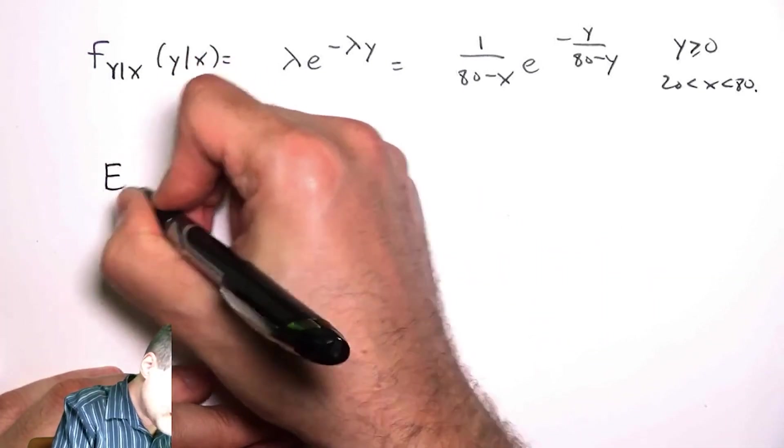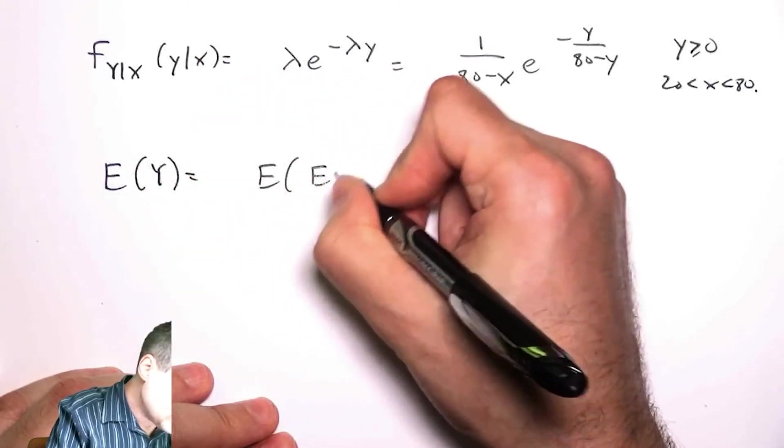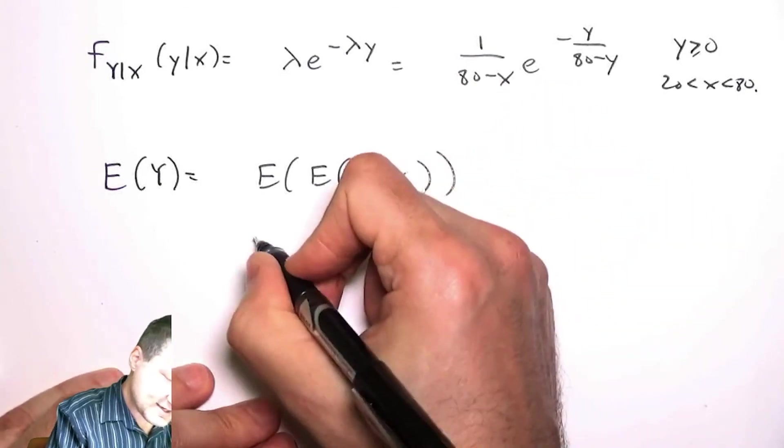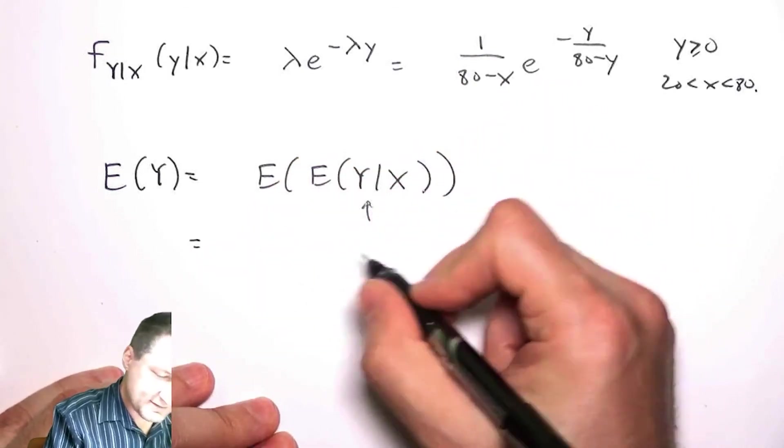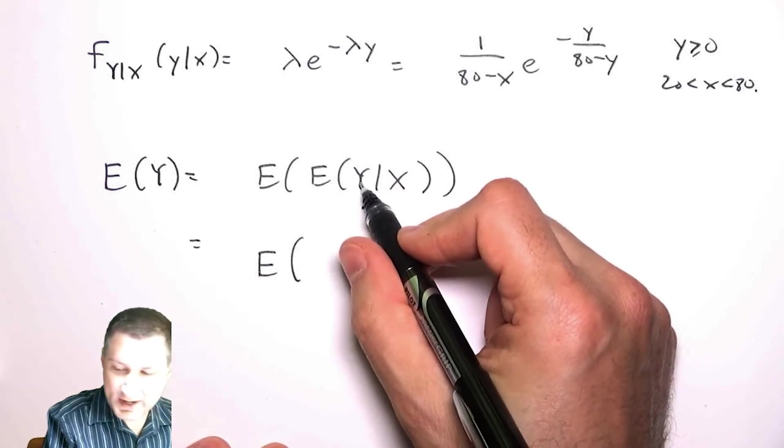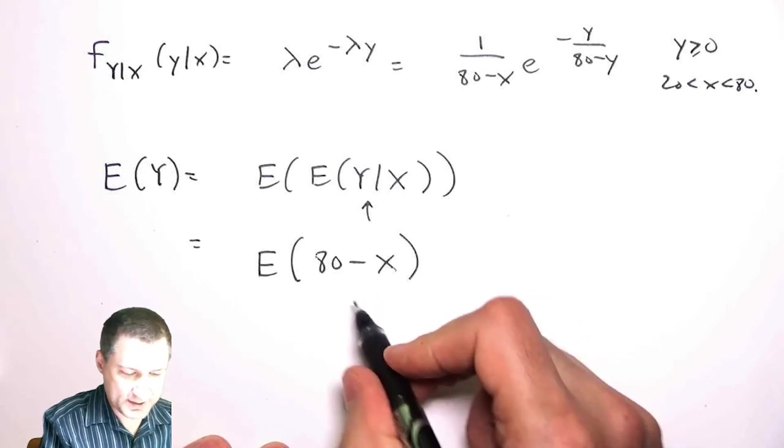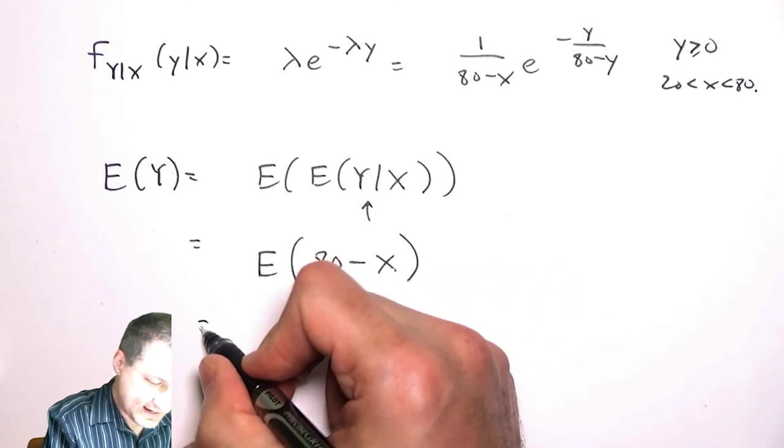So expected value of Y, again, I can use this law of iterated expectations to be super slick about it, right? This is like saying, okay, this here is like a function of X. This is like saying, if I tell you X, the expected value of Y given X is just 1 over the lambda from the exponential, that's 80 minus X, right?